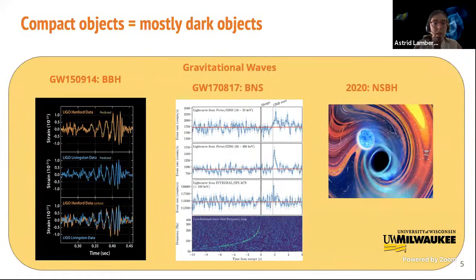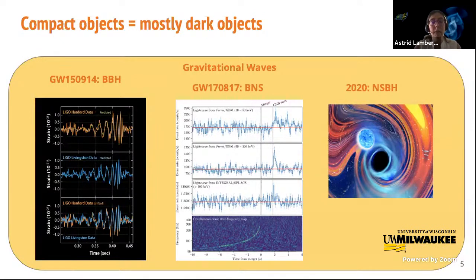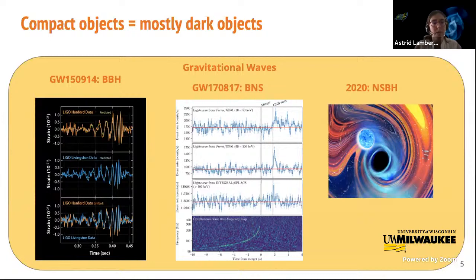Gravitational waves are a beautiful means to study compact objects. In 2015, we detected the first merger of binary black holes with this now famous waveform, which brought a second Nobel Prize in Physics for gravitational waves—this time for the direct detection. This proved that these binaries existed and had properties that allowed them to merge. Years later, LIGO and Virgo announced the detection of a binary neutron star merger, accompanied by emission throughout the entire electromagnetic spectrum, making the connection between binary neutron star mergers and gamma-ray bursts, as well as kilonovae, opening a new era of multi-messenger astronomy.